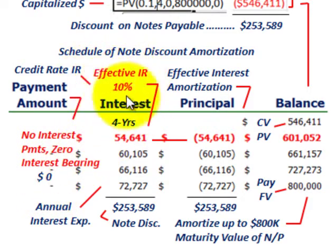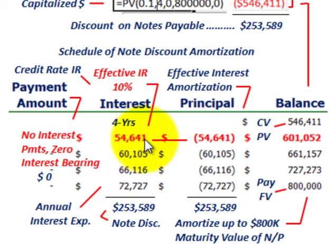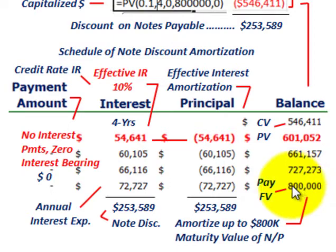The effective interest rate is 10%, based on their credit rating. To determine effective interest each year, we take 10% times the beginning balance of $546,411, giving us interest expense for the first year of approximately $54,641. That becomes our increase in the principal balance to amortize. Adding that to the beginning balance gives us a new balance of $601,052. Multiply that by 10% to get interest expense for the next year, and continue until the discount is fully amortized up to the maturity value of $800,000.